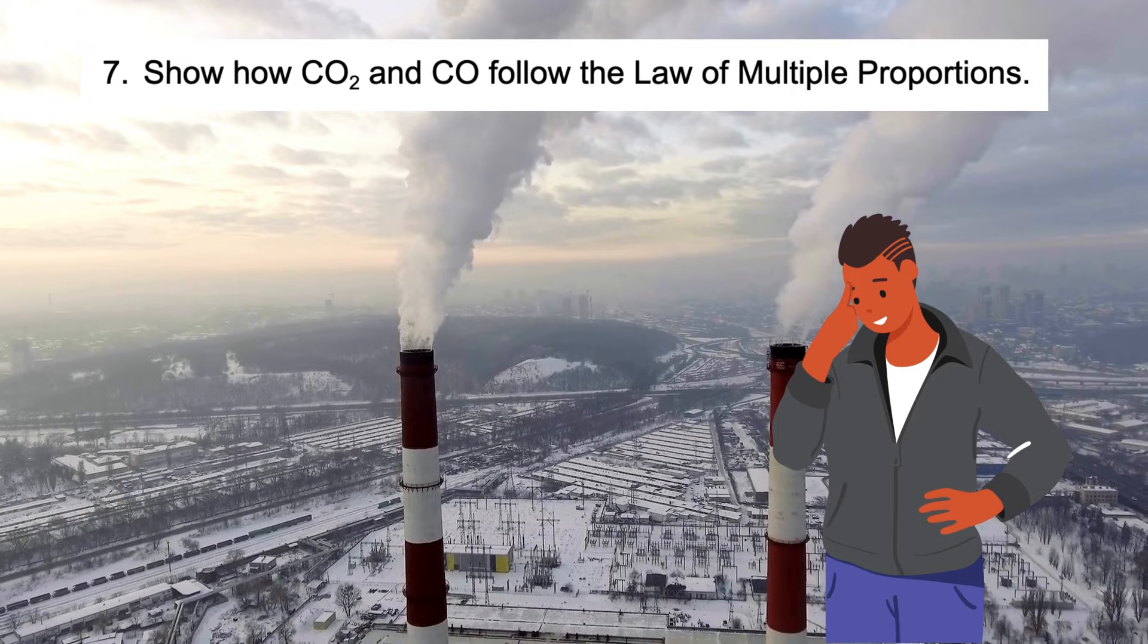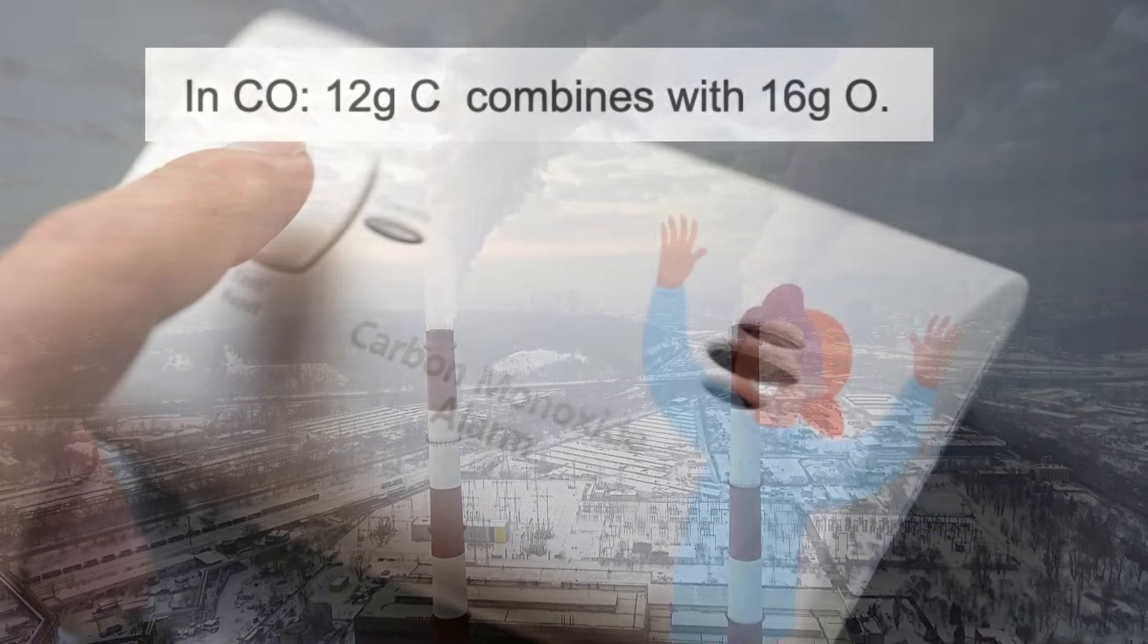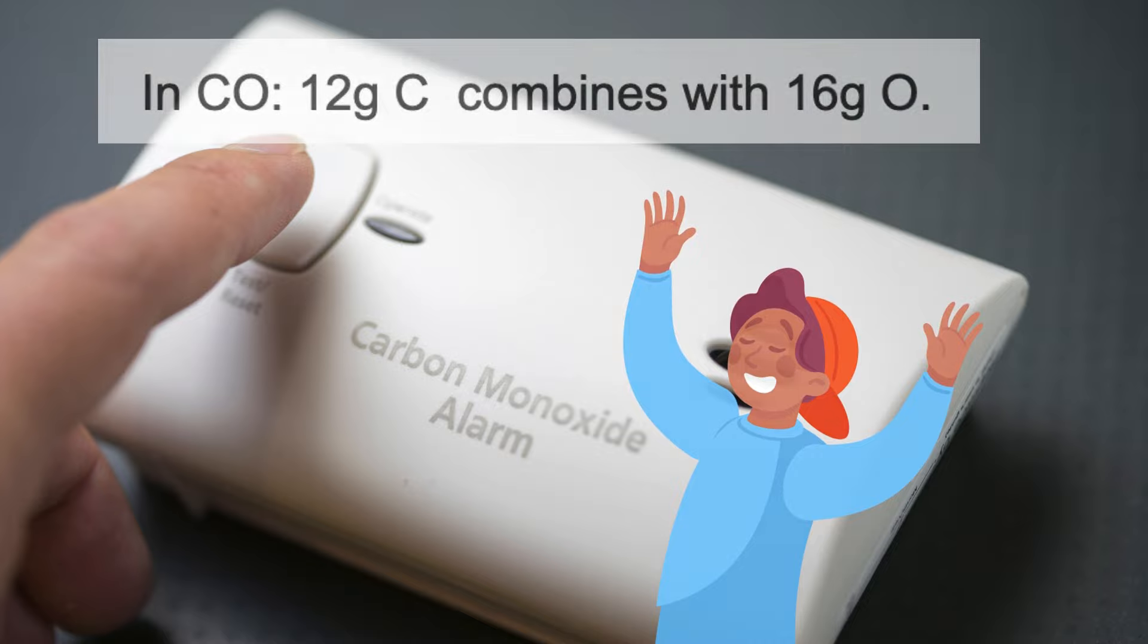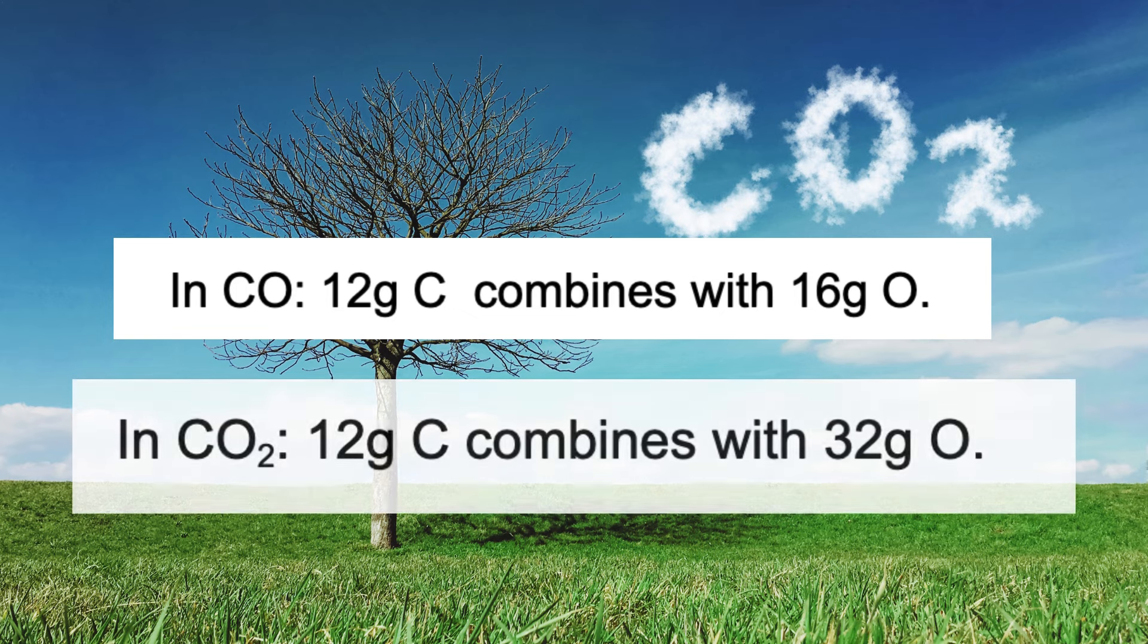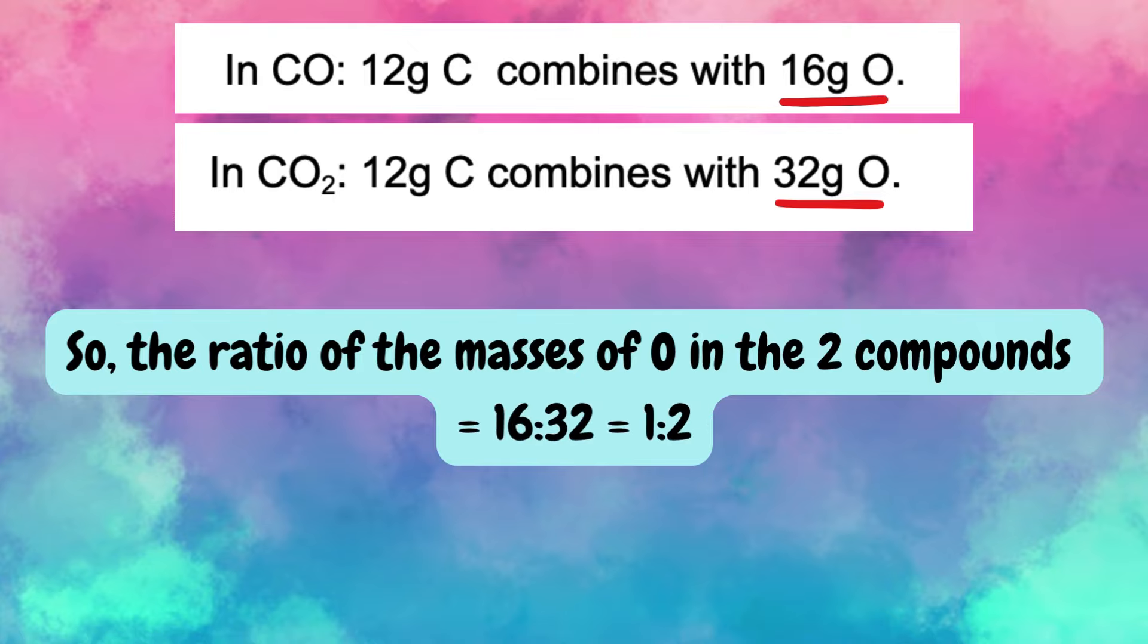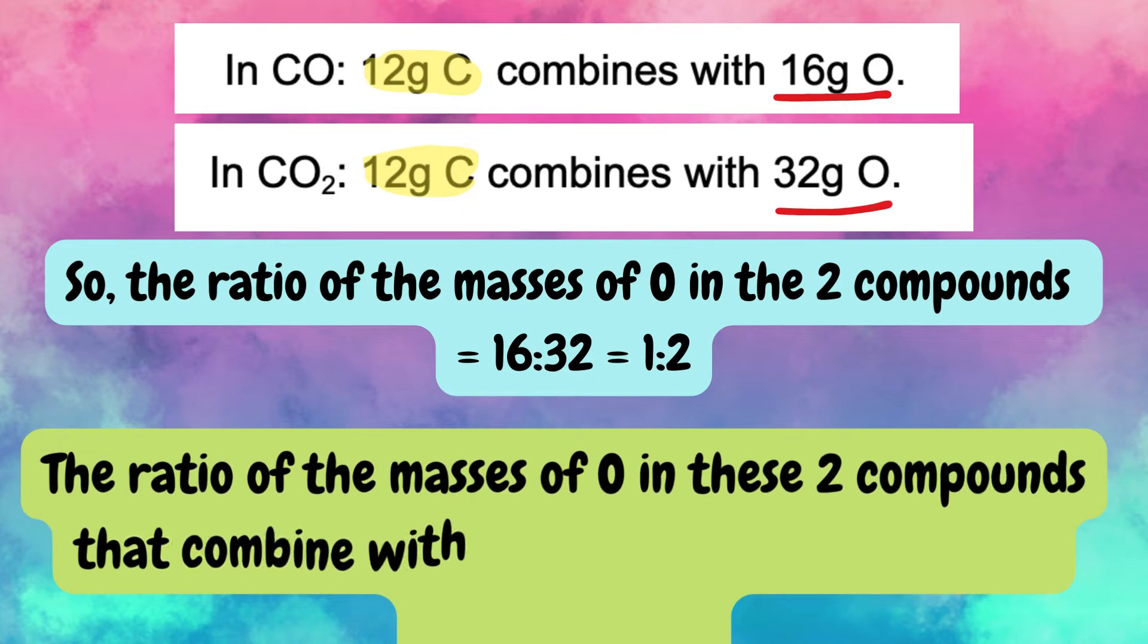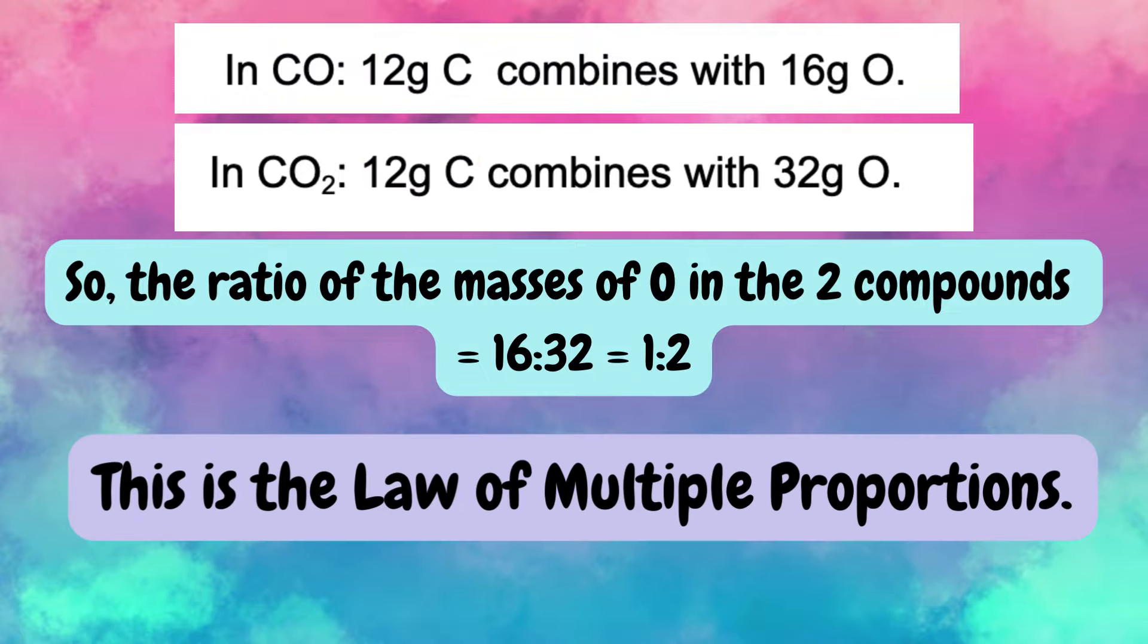Question seven: Show how carbon dioxide and carbon monoxide follow the law of multiple proportions. In carbon monoxide, 12 grams carbon combines with 16 grams of oxygen. In carbon dioxide, 12 grams carbon combines with 32 grams of oxygen. So the ratio of the masses of oxygen in the two compounds is equal to 16 to 32, which equals 1 to 2. Thus the ratio of the masses of oxygen in these two compounds that combine with a fixed mass of carbon is a simple whole number ratio, and that is the law of multiple proportions.